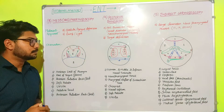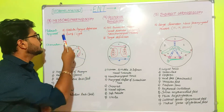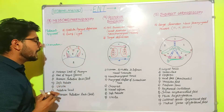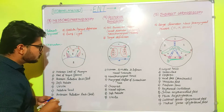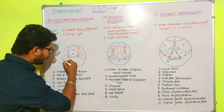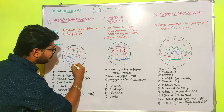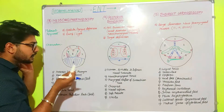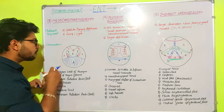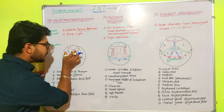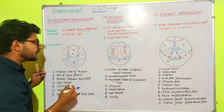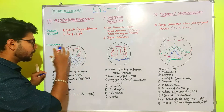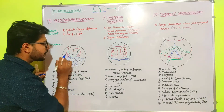Regarding the observations in mesopharyngoscopy after depressing the tongue: number two represents the root of the tongue, which we have depressed with the spatula. After the patient opens the mouth and we depress the tongue, in the posterior area, number one represents the posterior wall of the pharynx, which is a part of the pharynx.